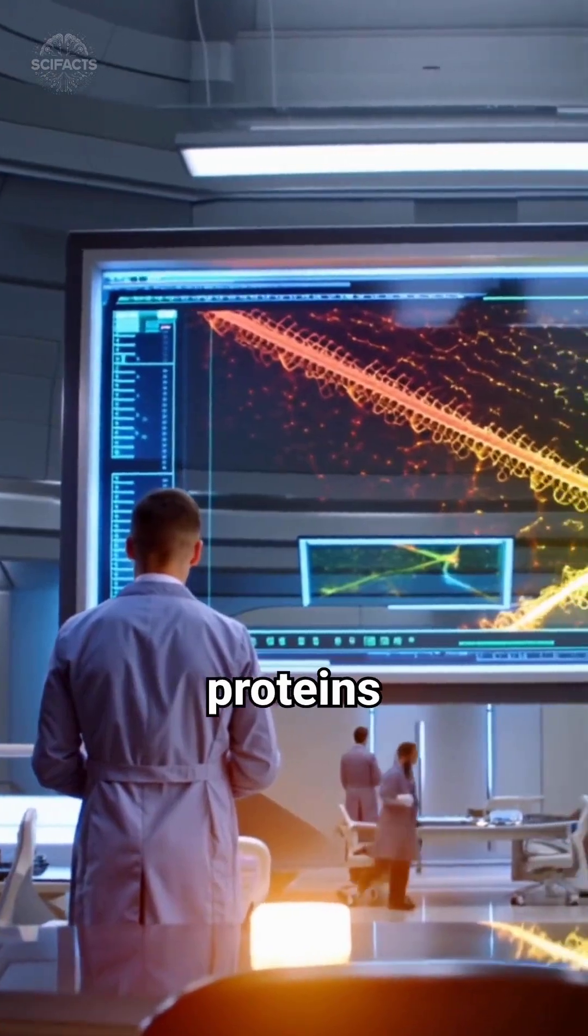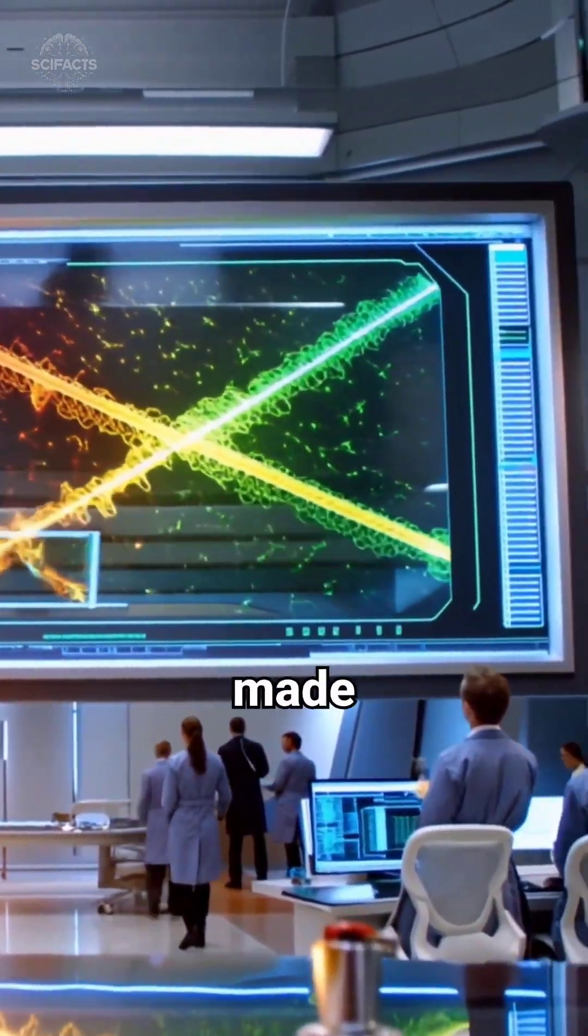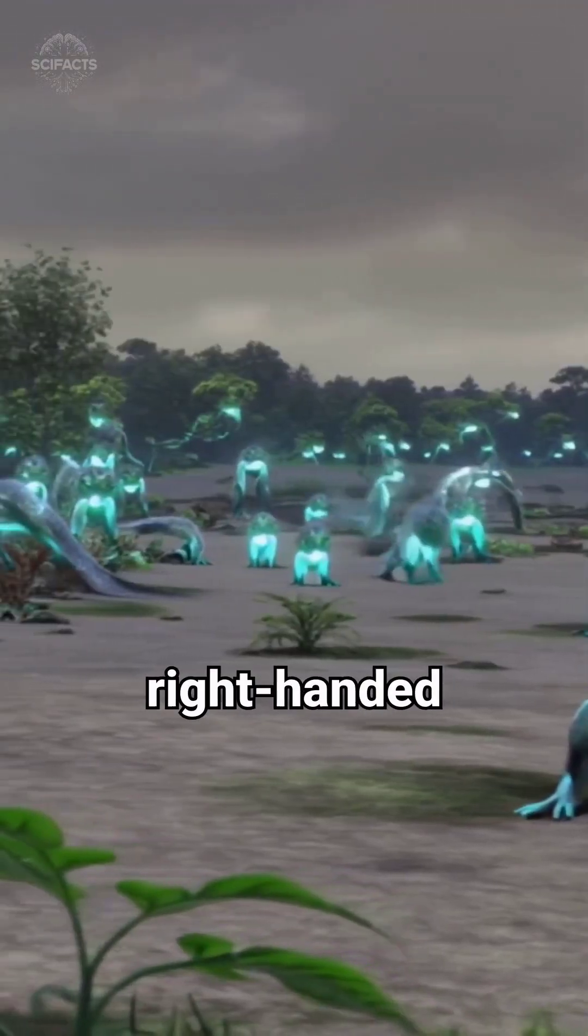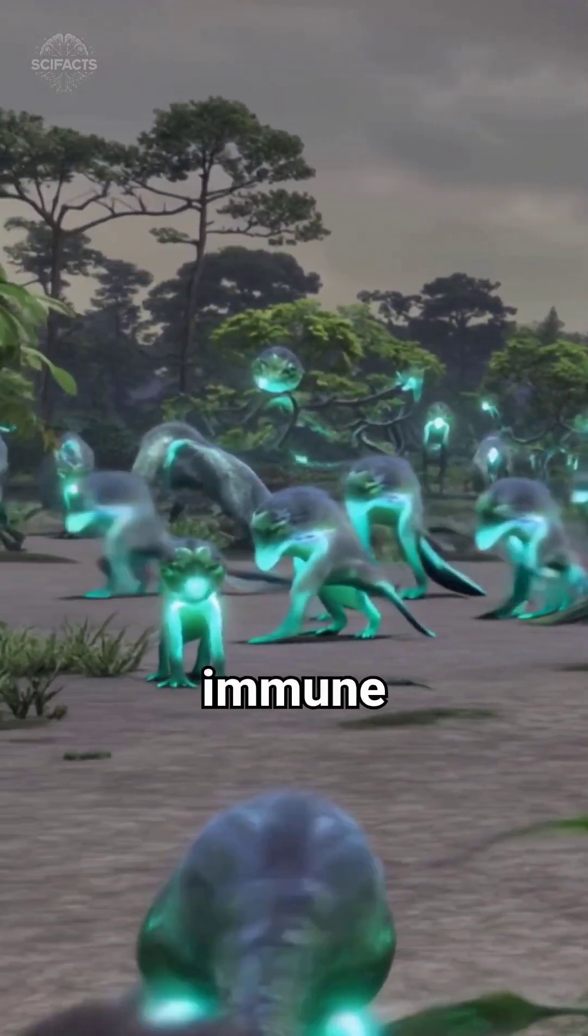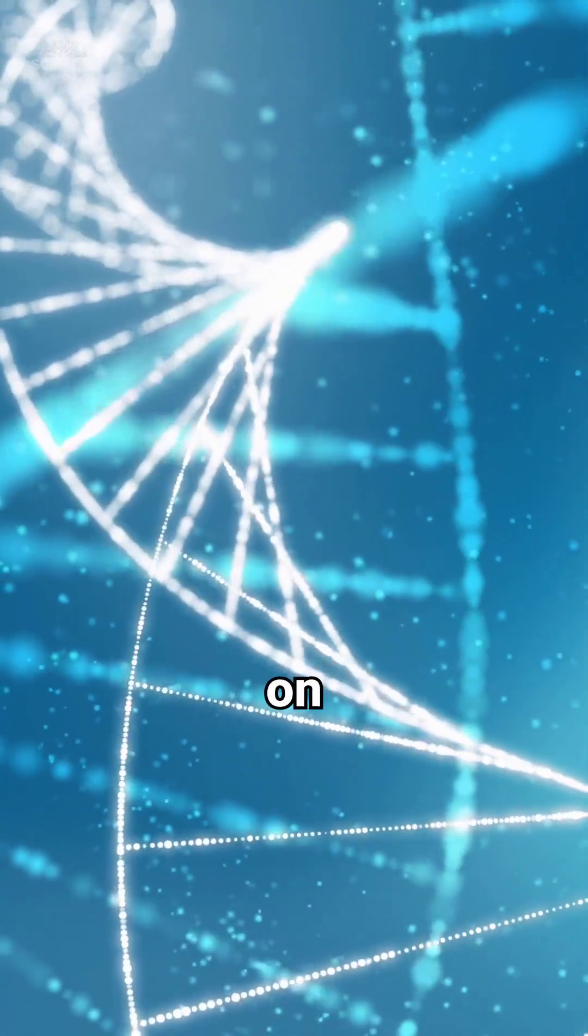Unlike the DNA and proteins we know, these entities would be made of left-handed sugars and right-handed amino acids, an inverted biology that could escape immune systems and wreak havoc on ecosystems.